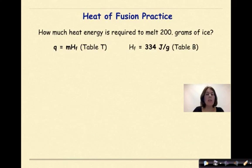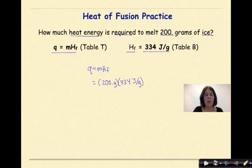Let's do a practice problem. How much heat energy is required to melt 200 grams of ice? So we're going to use the formula Q equals MHf, which is the heat of fusion found on reference table T. And we're going to use the heat of fusion value found on table B, which is 334 joules per 1 gram of water. So we're going to rewrite our formula. Q equals MHf. We're going to substitute in our values. Our mass is 200 grams of ice. We're going to multiply that times our heat of fusion, which is 334 joules per gram.